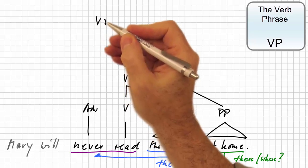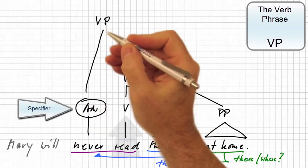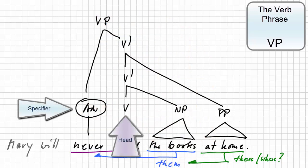So, the verb phrase, like all other categories, has an optional specifier, a phrasal head, the verb, and depending on the number of additional phrasal constituents, a set of intermediate V-bar nodes.